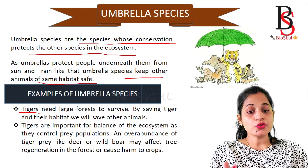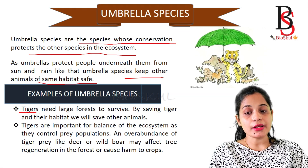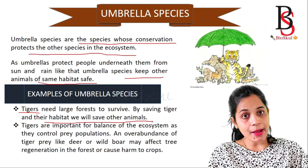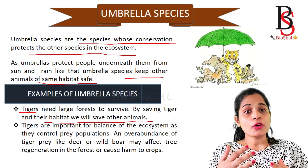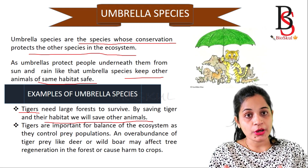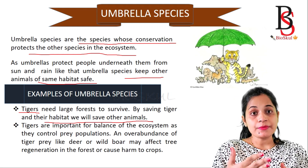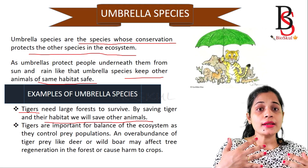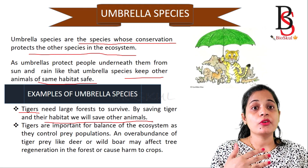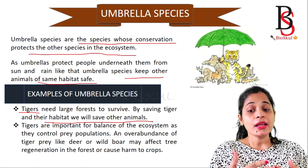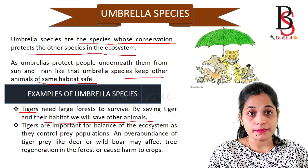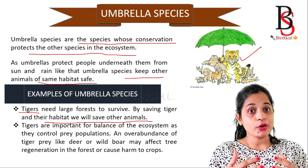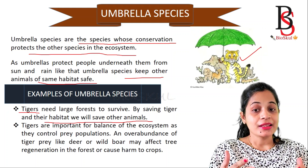Tigers need large forests to survive, and by saving the tiger we can save other animals present in that habitat. Tigers are important for the balance of the ecosystem as they control the prey population. If tigers are absent, the prey species like deer, boar, and other herbivores will increase in number, which may decrease the health of the forest ecosystem. By protecting the tiger, we protect the other animals in the same habitat — that's why the tiger is an example of an umbrella species.